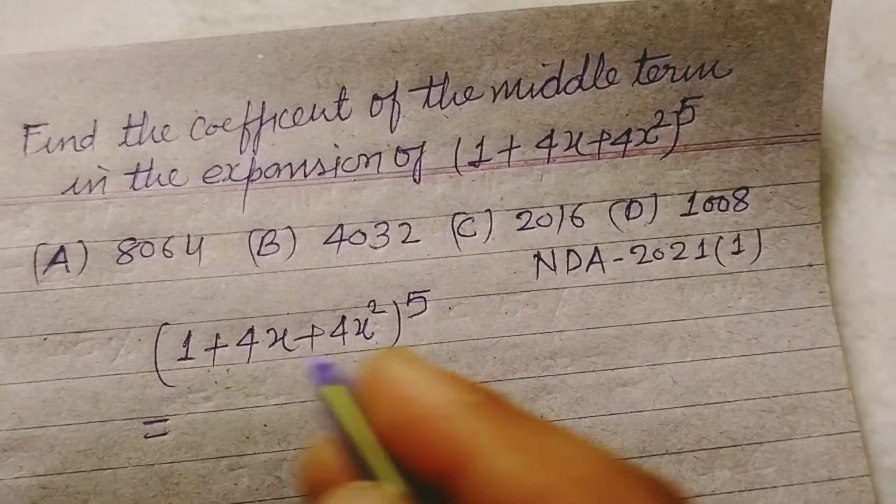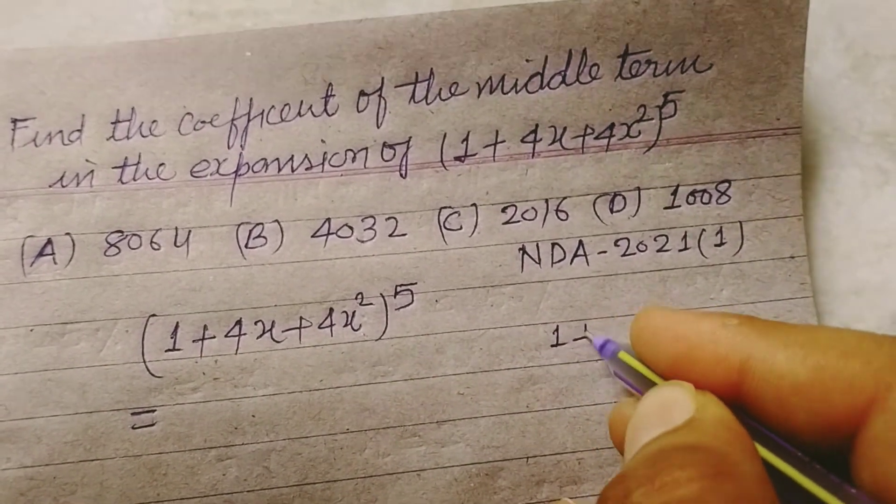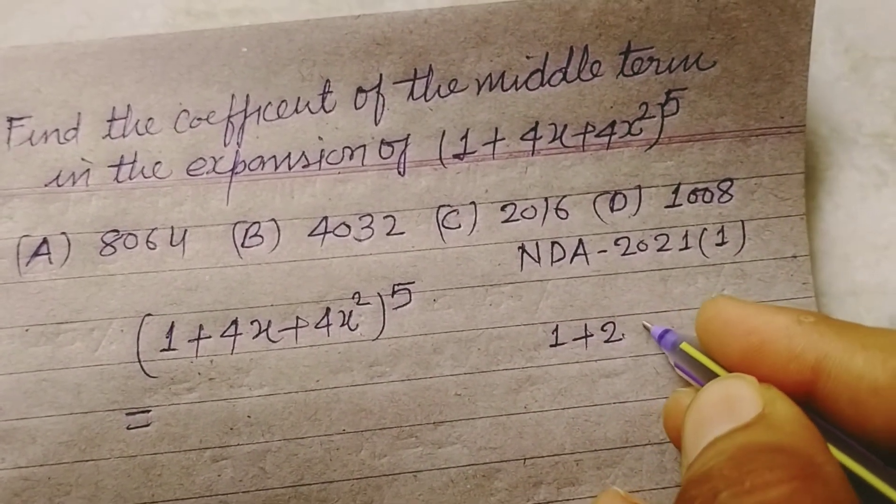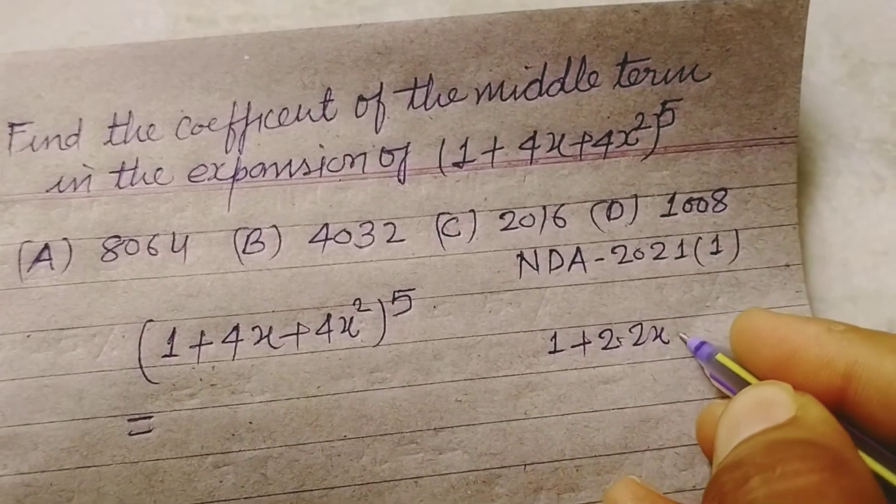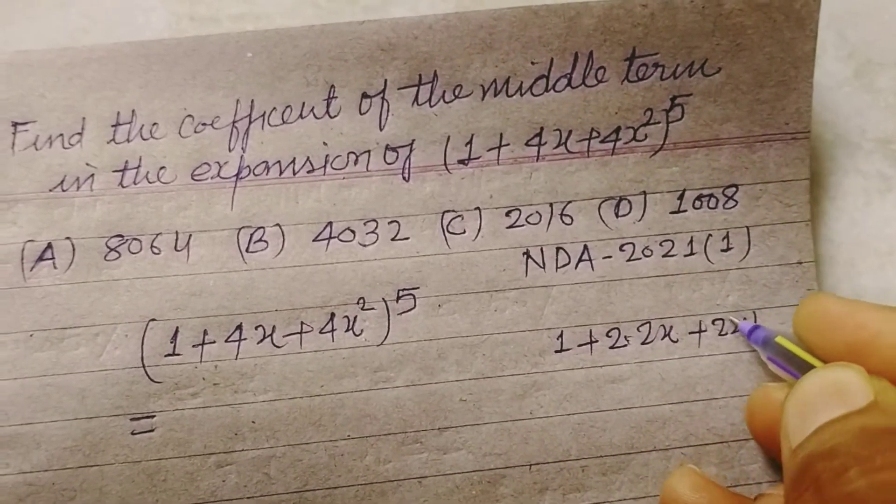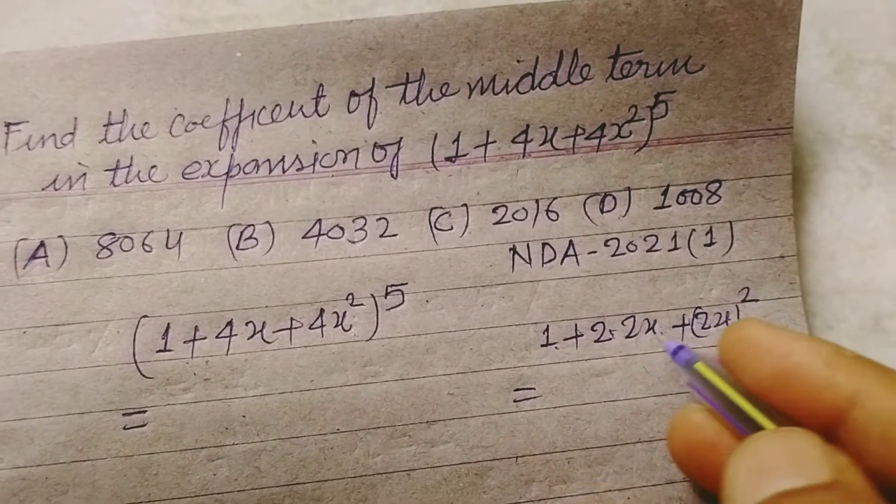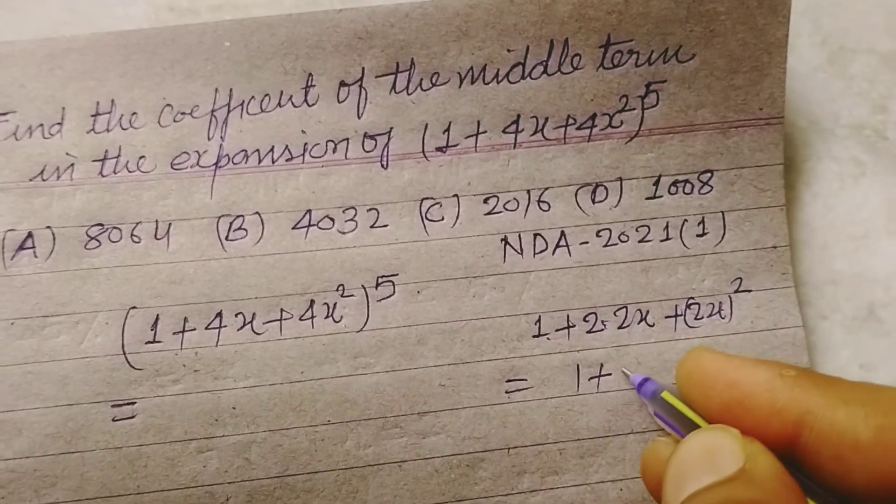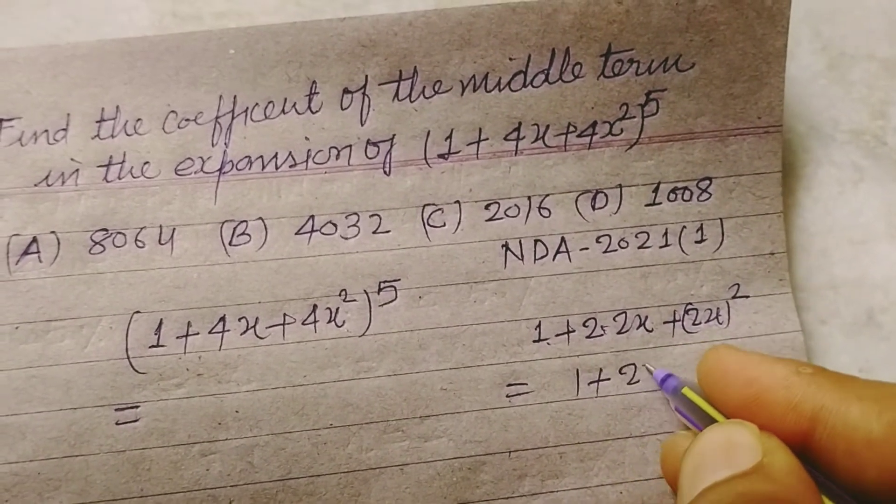Now this is a whole square. 1 plus 4x we can write as 2 into 2x plus 2x whole square. So this is a square plus b square plus 2ab. This is the whole square of 1 plus 2x.